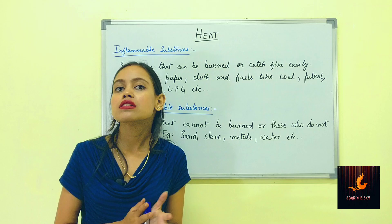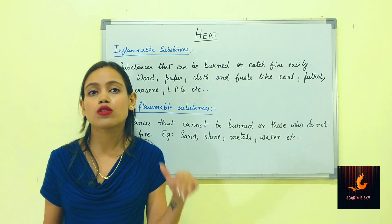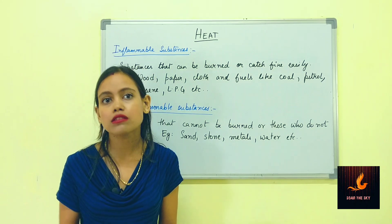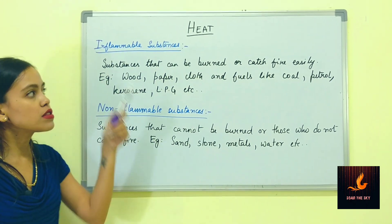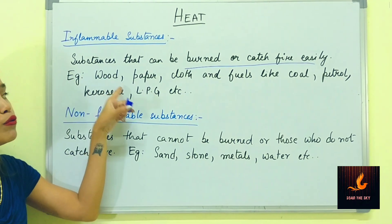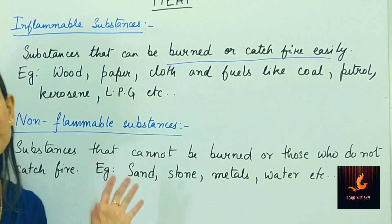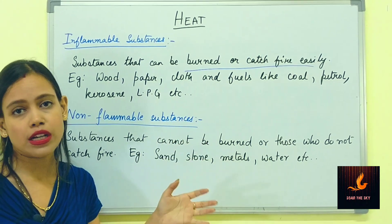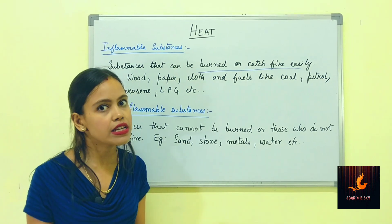Not all substances can burn very easily. All substances can be categorized into two types. The first is inflammable substances — those that can be burned or catch fire very easily. Examples include wood, paper, cloth, fuels such as coal, petrol, diesel, kerosene, and LPG gas used at home. These are all inflammable substances that catch fire very easily.